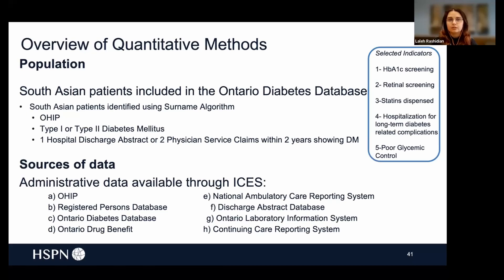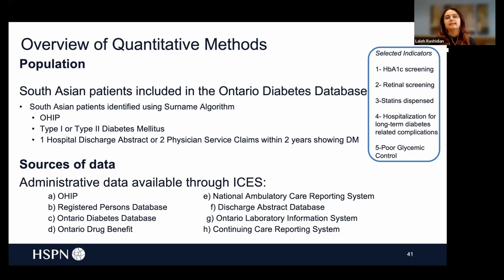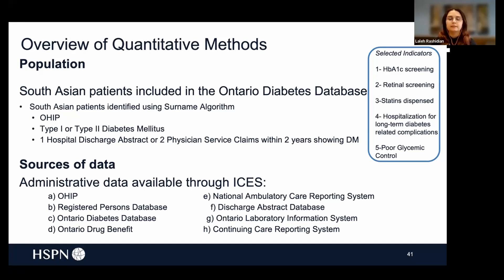This database covers all diabetes patients across Ontario. To separate the South Asian individuals, we used a surname algorithm developed in 2010. This is a list of surnames common among the South Asian population but not common among other ethnic groups. It has been found to have very high specificity — over 90% — but since it excludes surnames shared with other ethnic groups, the sensitivity is lower.